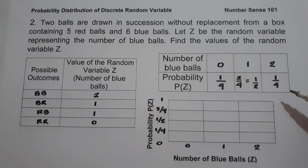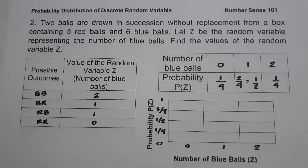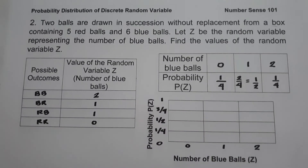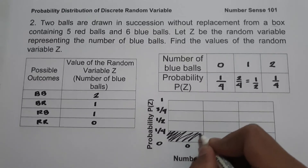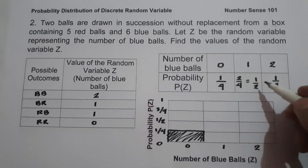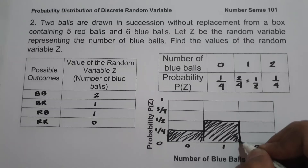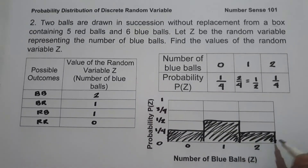We now have the probability distribution of the discrete random variable Z representing the number of blue balls. The last step is to make a histogram by plotting values of Z along the horizontal axis and probabilities along the vertical axis: 0 and 1/4, then 1 and 1/2, then 2 and 1/4. This is the histogram for the probability distribution of the discrete random variable Z.